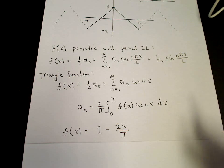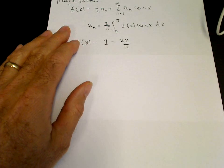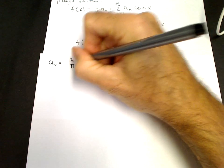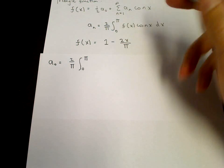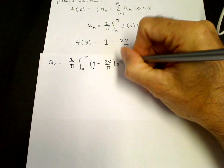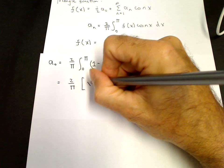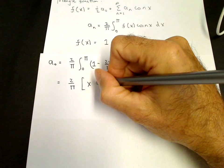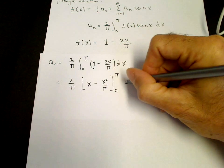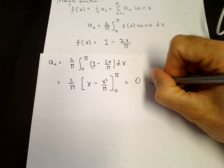Let's explicitly compute the a0 term. a0 equals 2 over π times the integral from 0 to π of (1 minus 2x over π) dx. The integral of 1 is x, and the integral of x is x² over 2, giving 2 over π times [x minus x²/π] from 0 to π, which equals π minus π²/π equals π minus π equals 0.